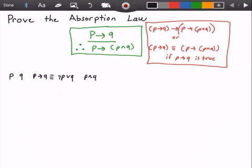And last but not least, we're going to need P implies P and Q, which is logically equivalent to not P or P and Q. So these are my columns that I'm going to be using.